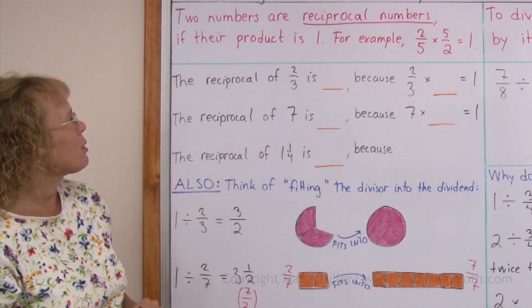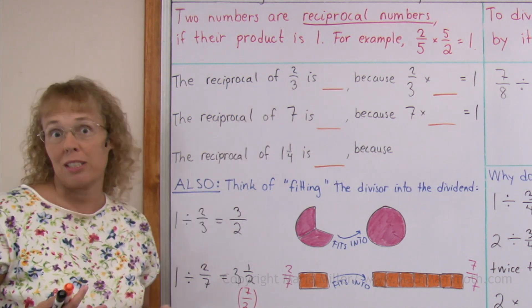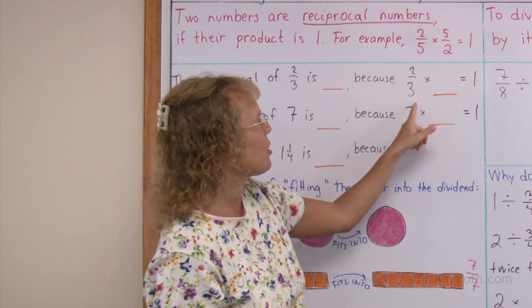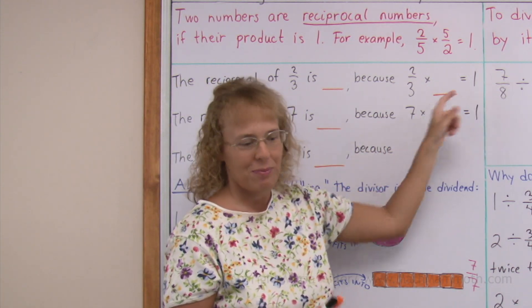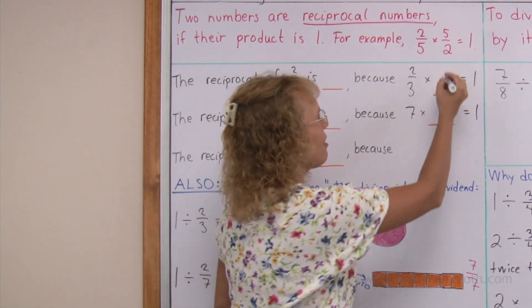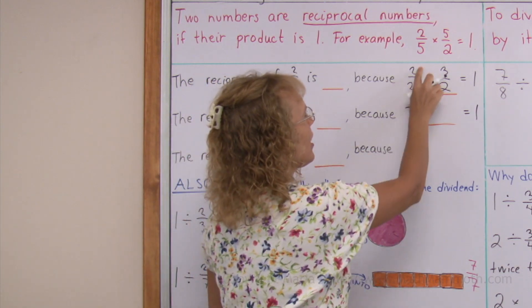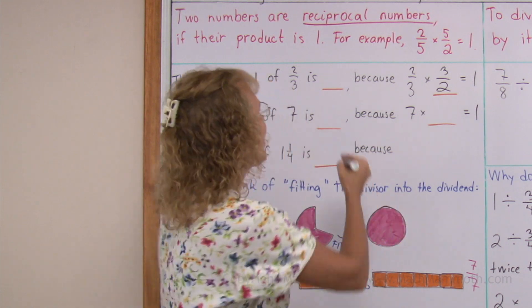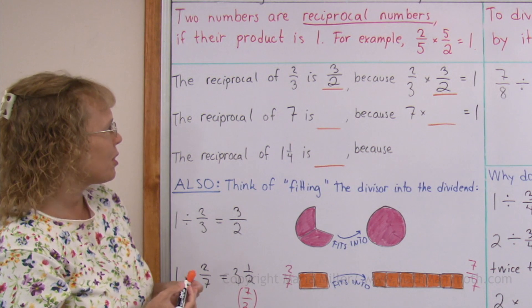Let's look at some more examples. The reciprocal of 2 thirds — it's some number so that 2 thirds times that number equals 1. What we can do is flip the fraction. I can write 3 over 2, because then in the multiplication I get 6 on top, 6 on bottom — 6 sixths, which equals 1. So, 3 halves is the reciprocal of 2 thirds.